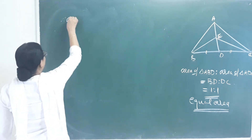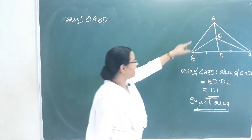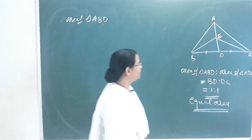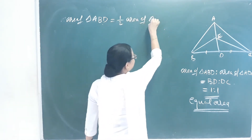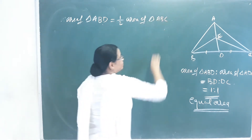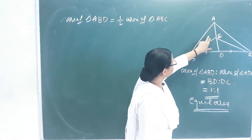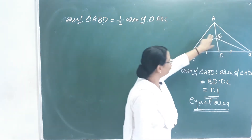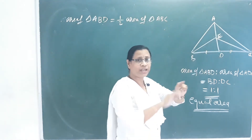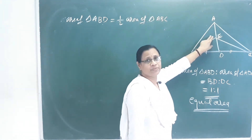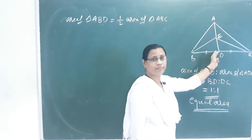Area of triangle ABD is equal to one half of area of triangle ABC, because D is the midpoint of BC, so the median AD divides triangle ABC into two equal halves.